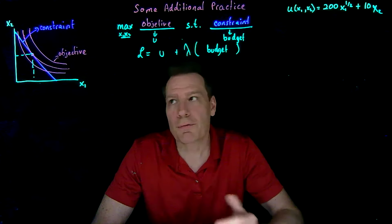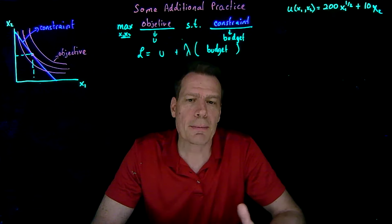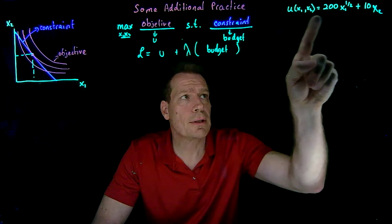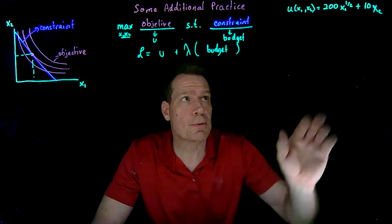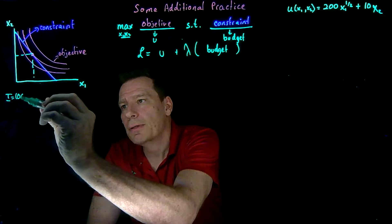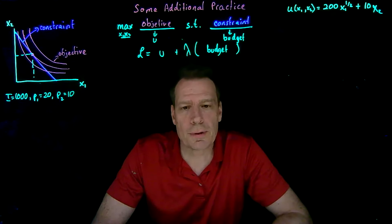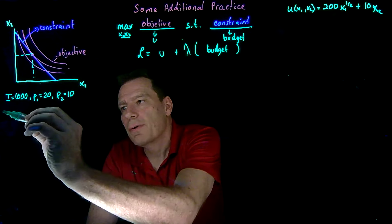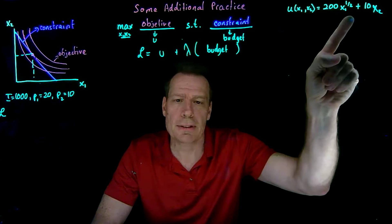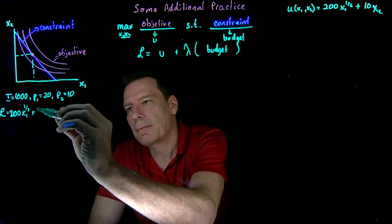I did introduce a different way of solving for this bundle in the first module, but it's a much less general way — I was just trying to give intuition for why we set derivatives to zero. The much more general way that'll work in many more circumstances is the Lagrange method. Suppose our utility is given by this function — a quasi-linear utility function. Suppose income is 1,000, the price of good one is 20, and the price of good two is 10. We have all the ingredients to set up the Lagrange function. So we start by putting in 200 times x1 to the one-half plus 10 times x2.